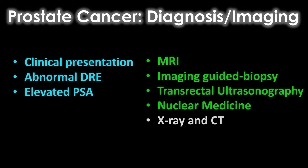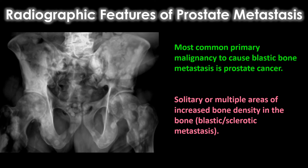When it comes to diagnosing prostate cancer, this is typically done through the combination of clinical presentation, abnormal digital rectal exams, and abnormal laboratory values such as prostate specific antigen. X-ray and CT are not that useful — they're really only good at seeing the end result of osseous metastasis. Advanced imaging such as MRI, image-guided biopsy, transrectal ultrasonography, and nuclear medicine modalities are much better for the diagnosis of prostate cancer.